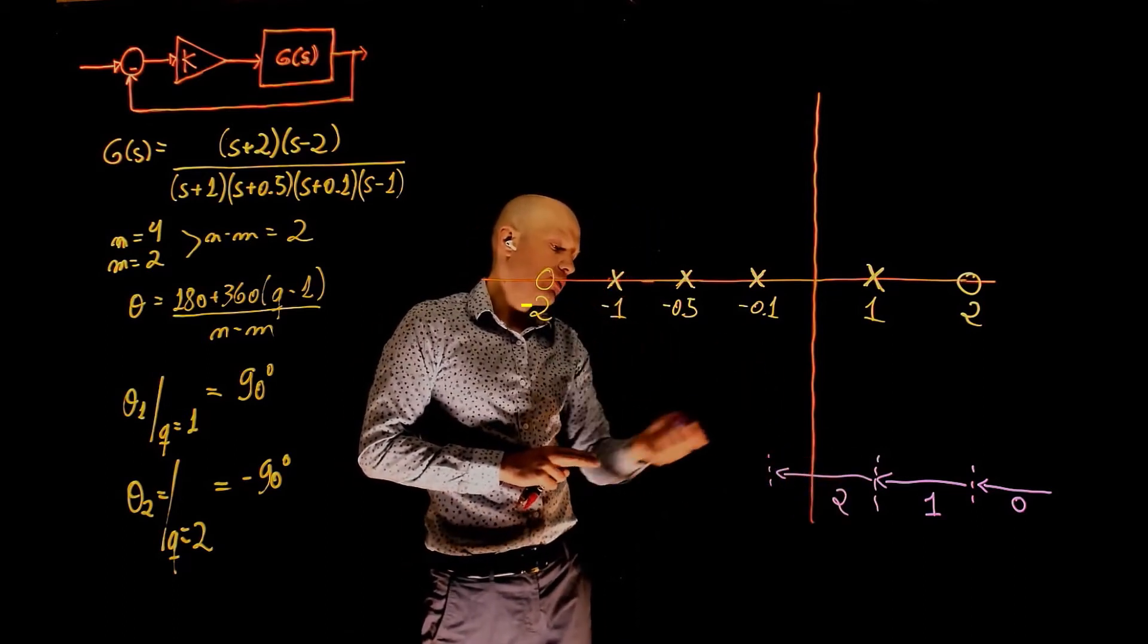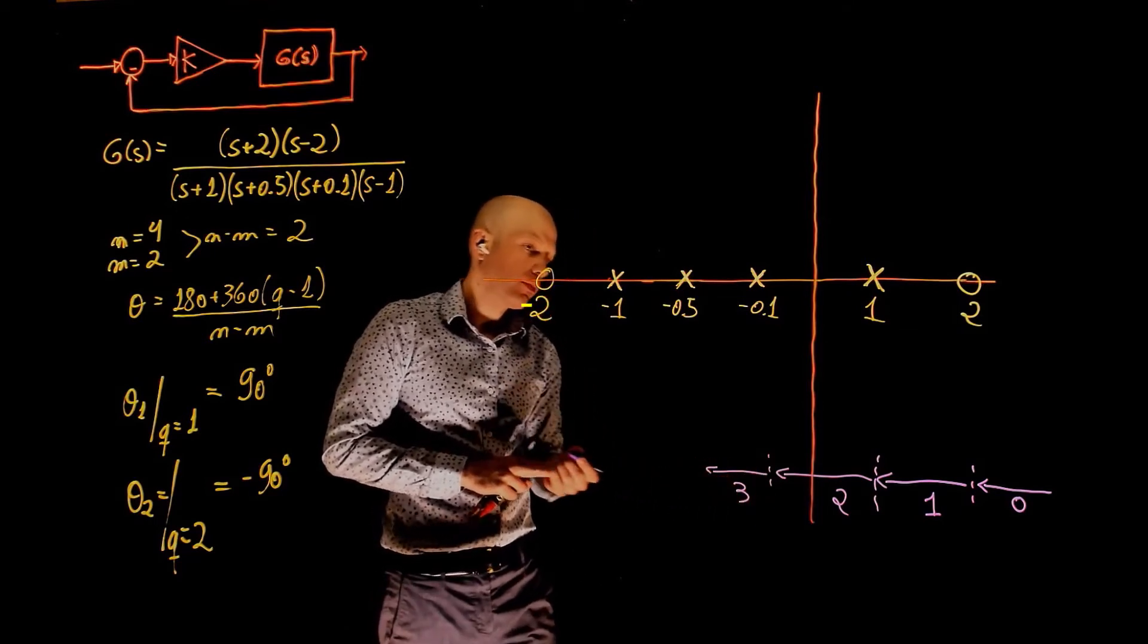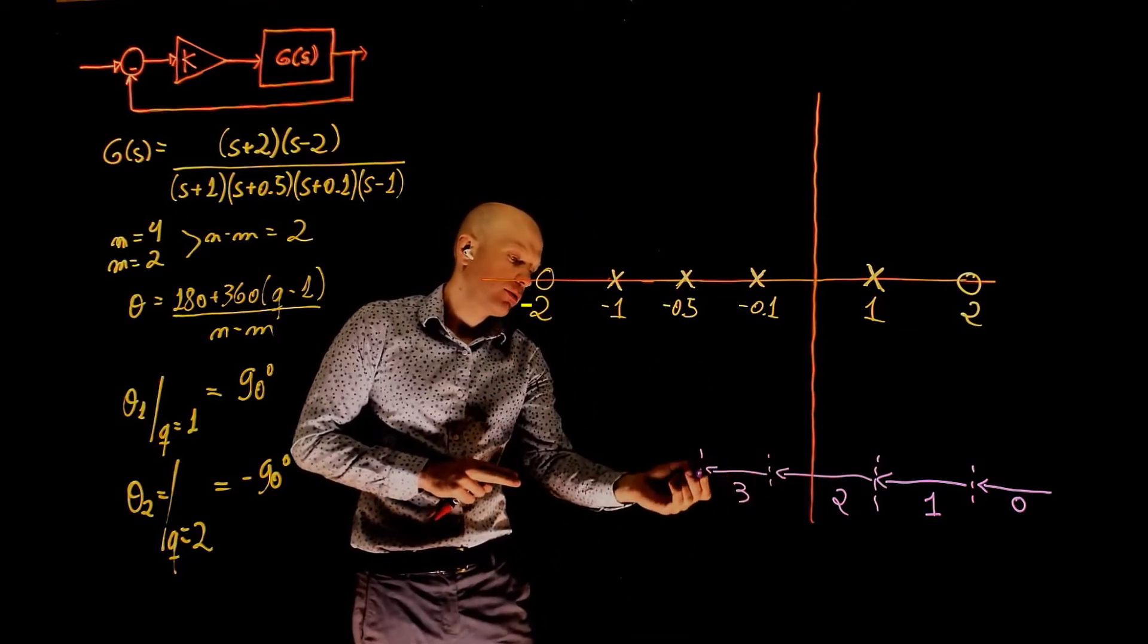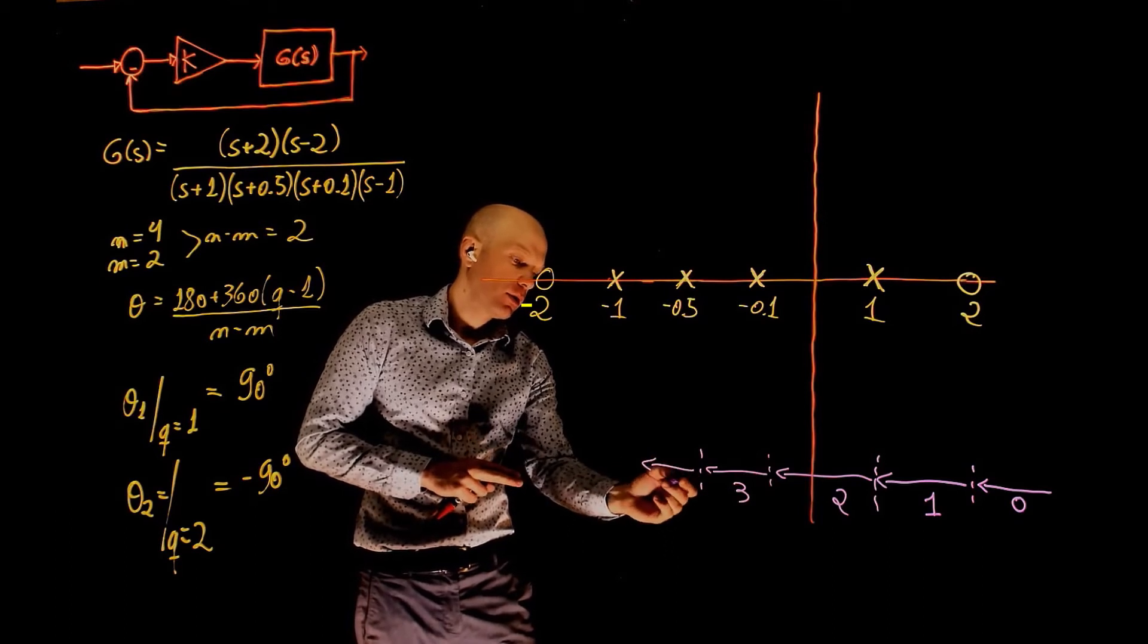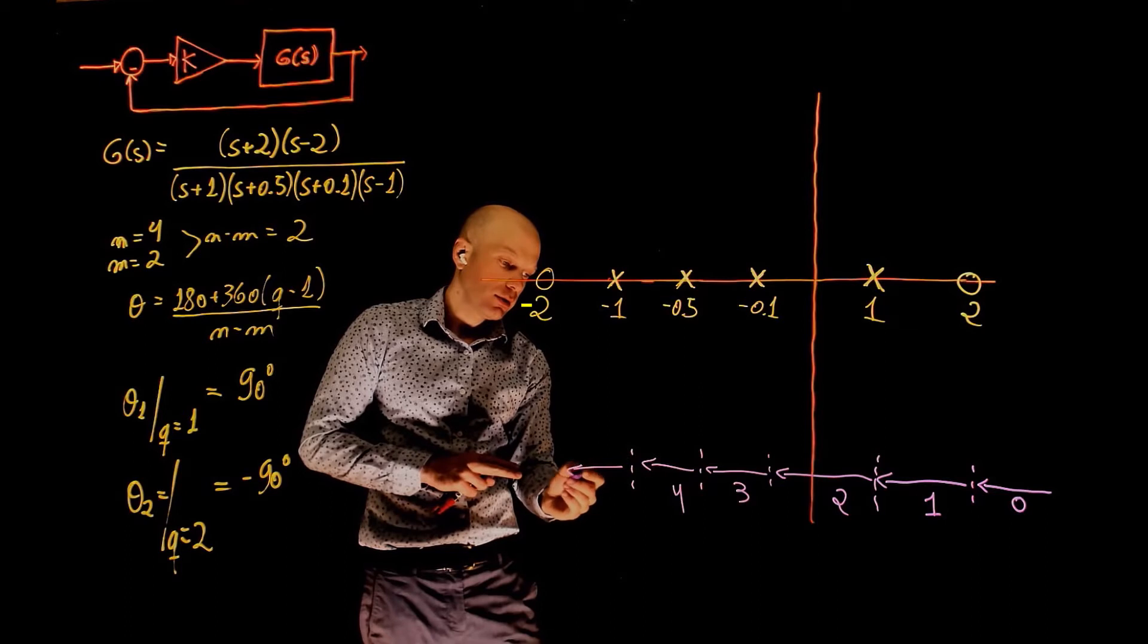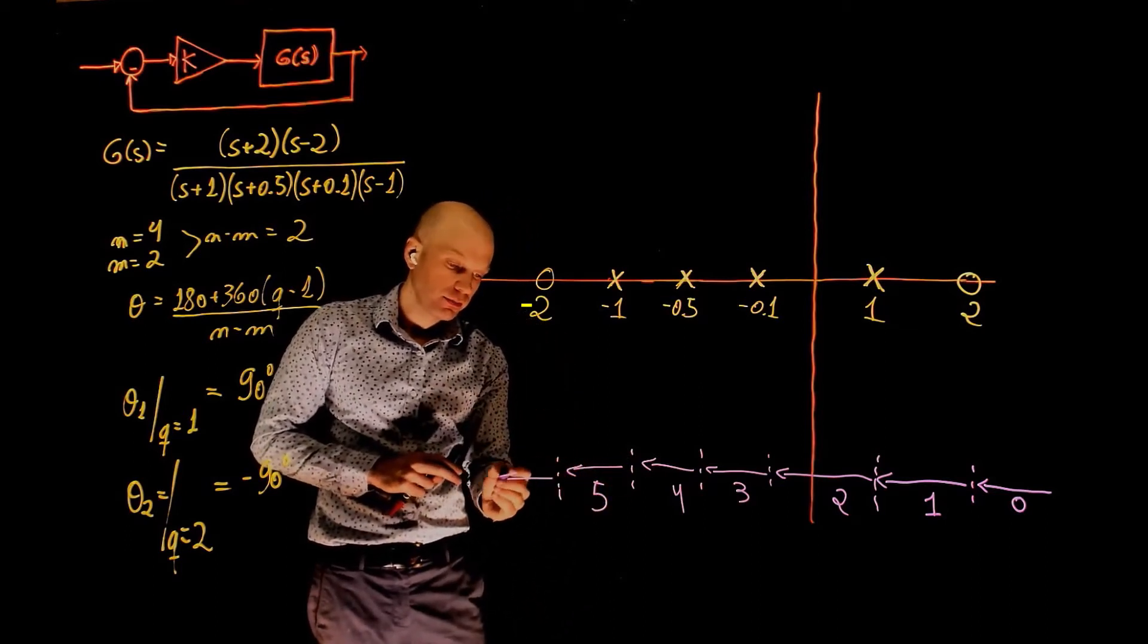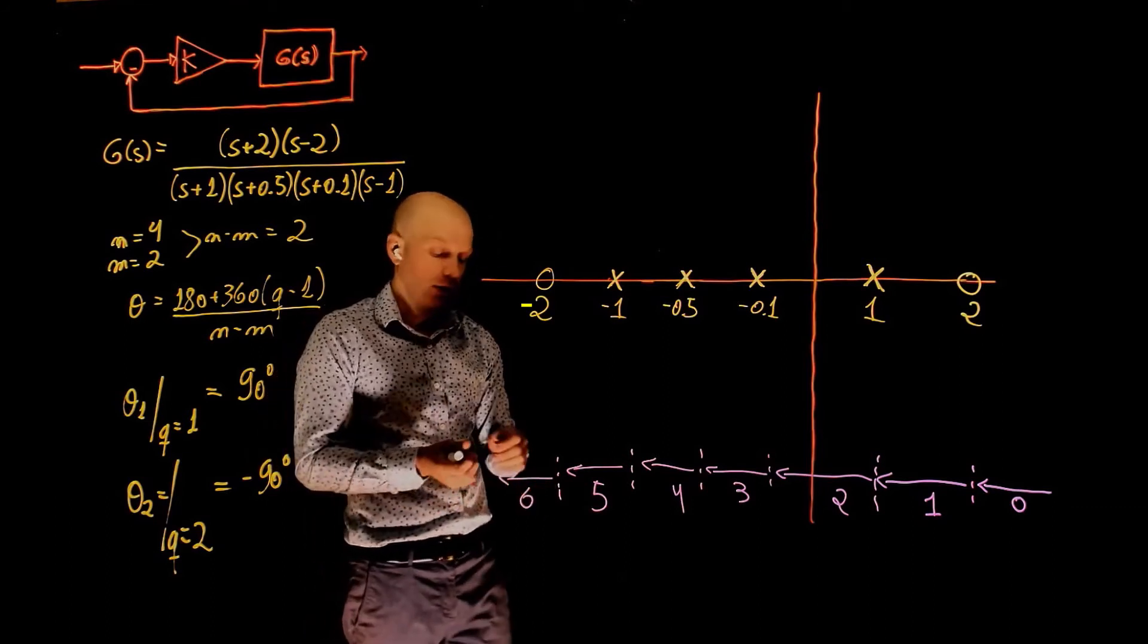When you reach negative 0.1, now the count becomes three. And when you reach 0.5, the count becomes four. And negative one, this is five. And passed negative two, the count now becomes six.